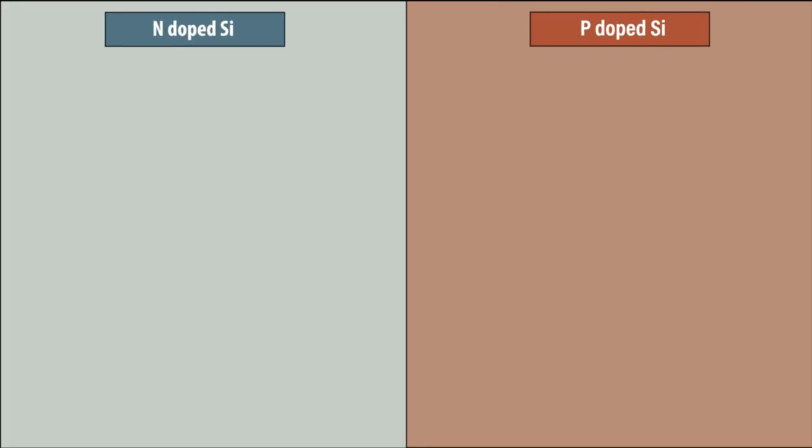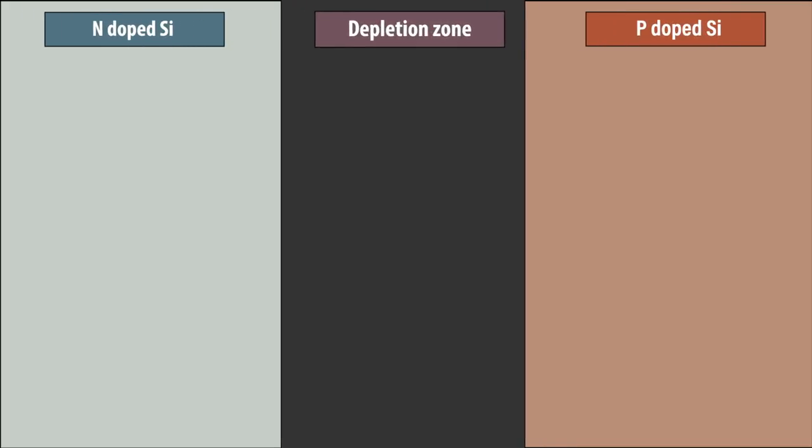Now, if you take a piece of N-doped silicon and bring it into contact with a piece of P-doped silicon, these charge carriers move around and cross the barrier between the materials, and this is called a P-N junction. At the interface of a P-N junction, an imbalance in the charges forms, which is called a depletion region.